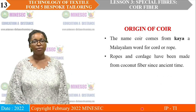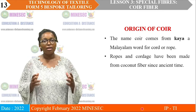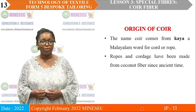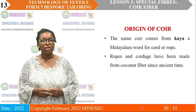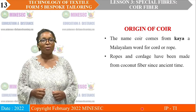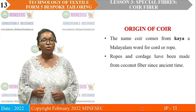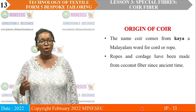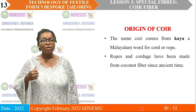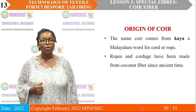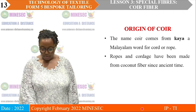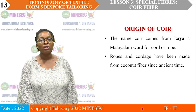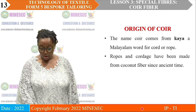Origin: before studying a fiber, we must know where it came from. The name Koi comes from 'Kaya,' which is a Malayalam word meaning coat or rope. It has been used since ancient times — the coconut fiber has been used as rope and cordage. The Austronesian people, who first domesticated coconut, used coconut fiber extensively for ropes in building houses.